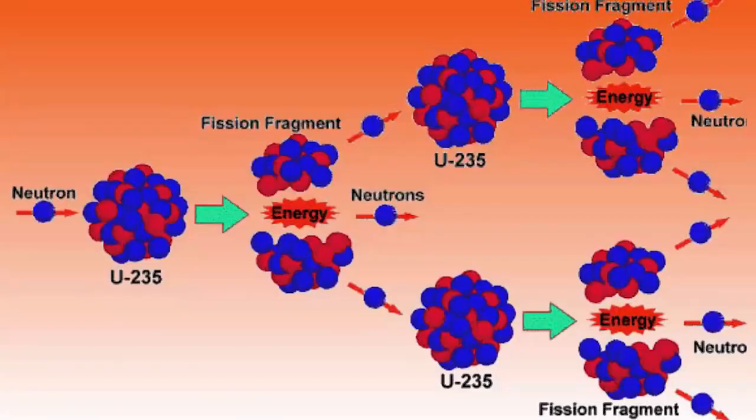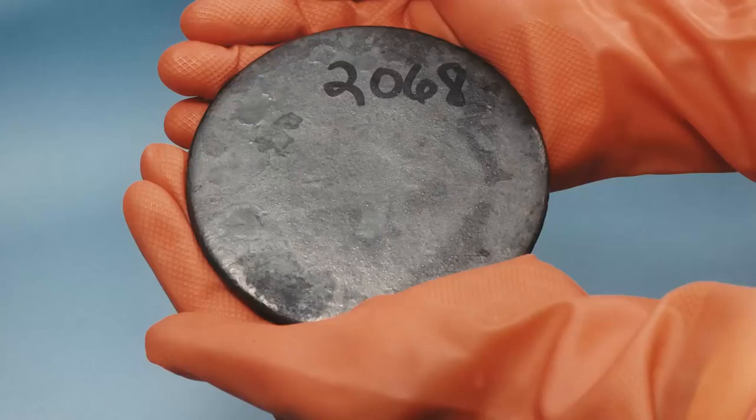Now there is one single naturally occurring isotope on our planet that has a very special ability. Uranium-235, if you hit it with a neutron, not only will it split apart, but it will create more neutrons. And those neutrons, if they hit another uranium-235, that will split apart and cause a nuclear chain reaction. This is the reason why we have nuclear power on this planet. Now U-235 is a rare isotope — it's about 0.7% of naturally occurring uranium. Uranium-238 is much more common and much more stable.